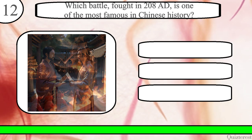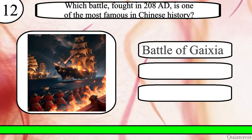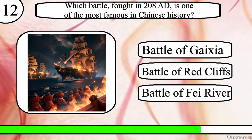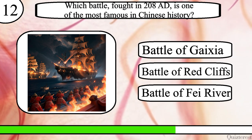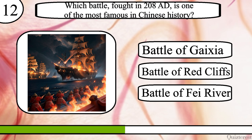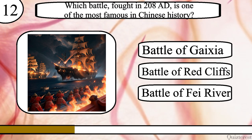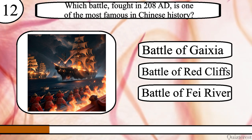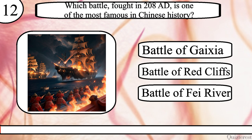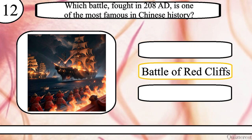Question 12. Which battle, fought in 208 AD, is one of the most famous in Chinese history? Battle of Gaxia, Battle of Red Cliffs, or Battle of Fei River? The correct answer is Battle of Red Cliffs.